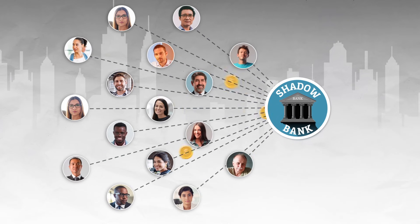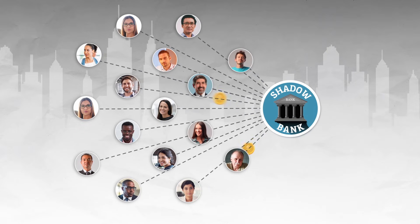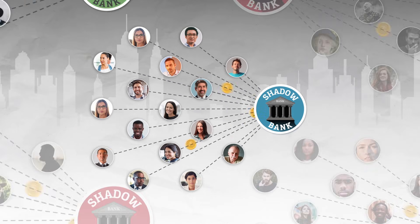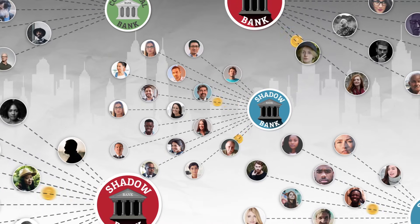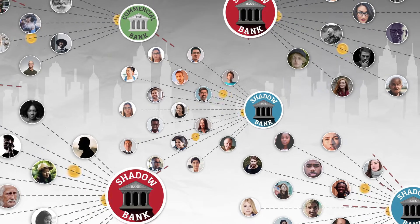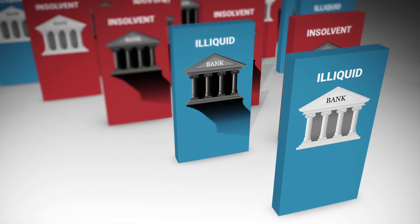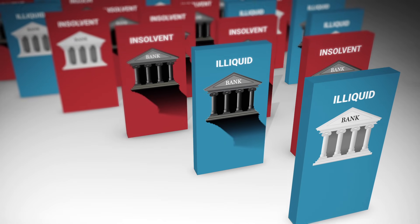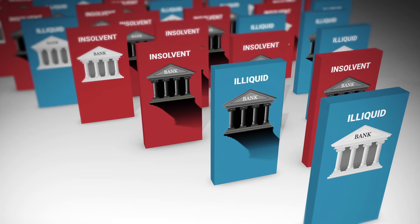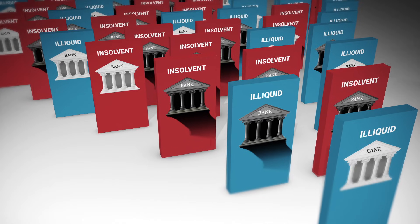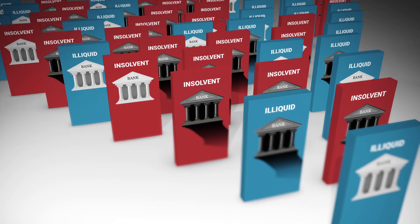Today, the shadow banking system does more lending than the traditional banks. In addition, the financial system has become more complex and intertwined, as financial assets are packaged, subdivided, bought and sold more than ever before. As a result, the Fed's lender of last resort and regulatory functions have become much more important and much more complex.